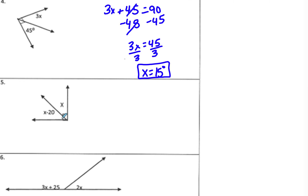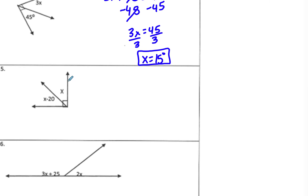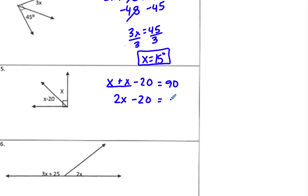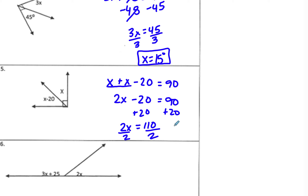For number five, same type of thing except this time I have two variables. So X plus (X minus 20) equals 90. Combining like terms, X plus X is 2X, giving 2X minus 20 equals 90. The minus 20 means I add 20 to both sides to get 2X equals 110, then divide both sides by 2 to get X equals 55.